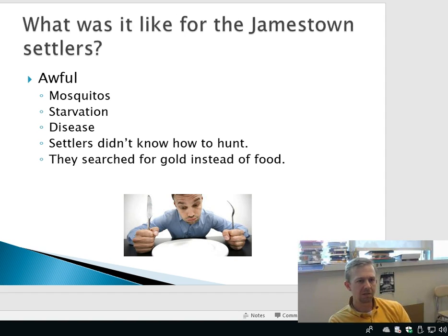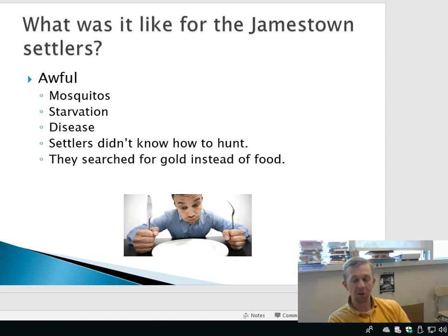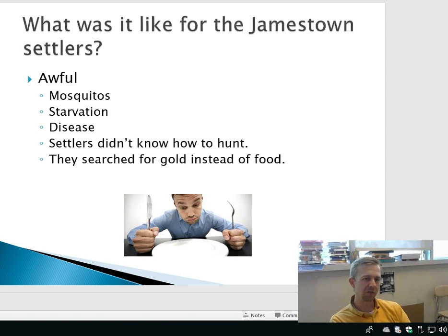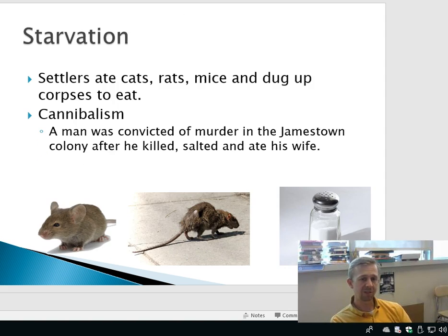The Jamestown settlers came to get rich, but what they found when they got there was just terrible. They found no gold, and they struggled to survive. There were mosquitoes, starvation, disease. They didn't know how to hunt. They were looking for gold instead of looking for sustenance, for food. Jamestown would eventually grow and they would figure out how to survive, but initially the first Jamestown settlers did not survive whatsoever.